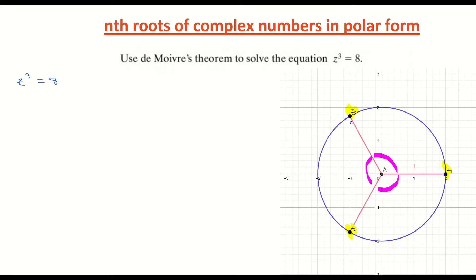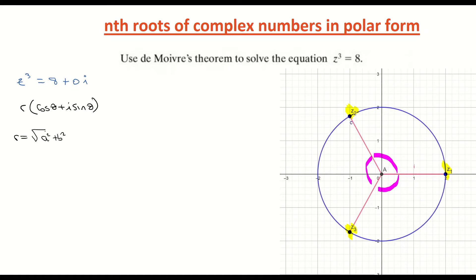Looking at the complex number, z³ = 8. They've only given us a real part, so I'm going to write it as 8 + 0i to make it easier to work with. That's in rectangular form. To convert to polar form, we need r(cos θ + i sin θ). The modulus r is found by taking the square root of a² + b², where a is the real part and b is the imaginary part.